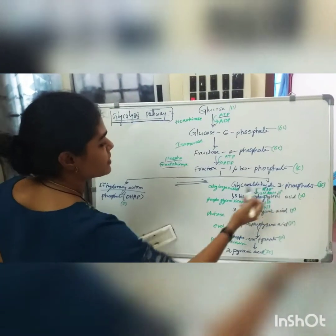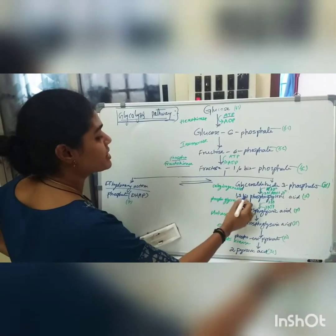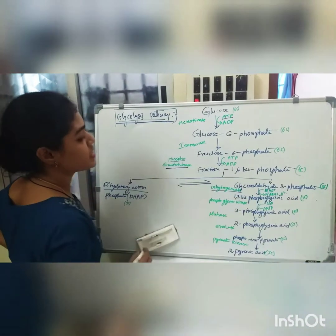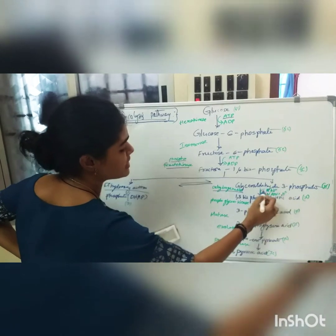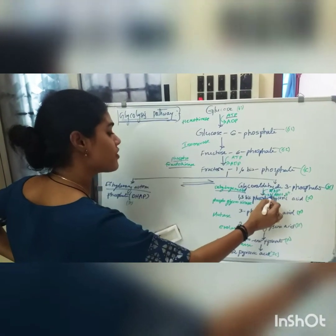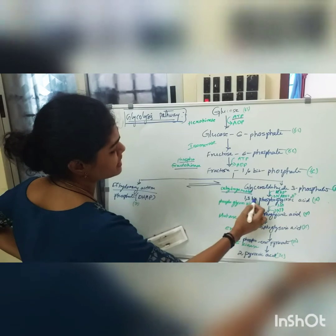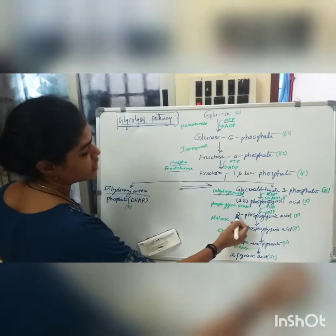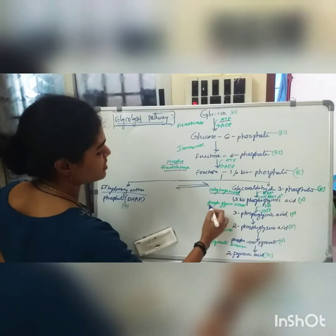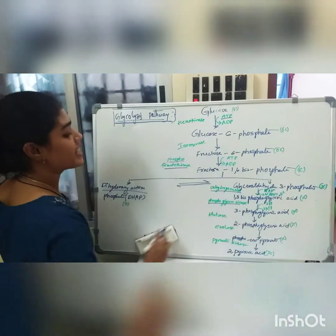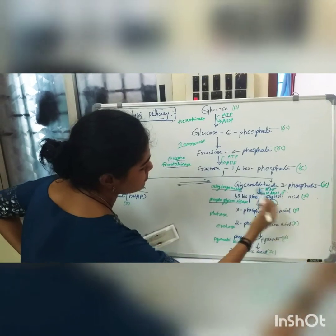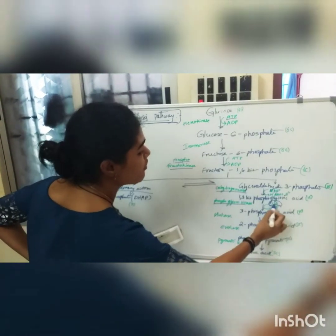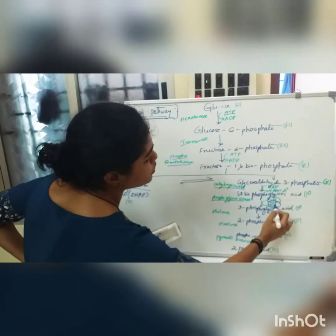Glyceraldehyde 3-phosphate is converted into 1,3-bisphosphoglycerate in the presence of dehydrogenase enzyme. NAD+ is utilized and energy is released in the form of NADH + H+. Then, 1,3-bisphosphoglycerate is converted into 3-phosphoglycerate in the presence of phosphoglycerate kinase enzyme. ADP is utilized and energy is released in the form of ATP, and we gain 2 ATPs here.